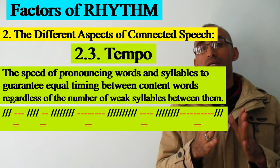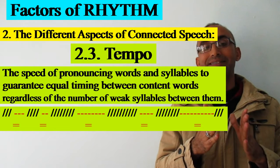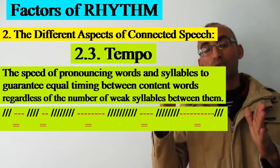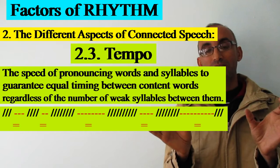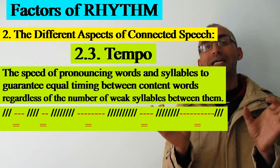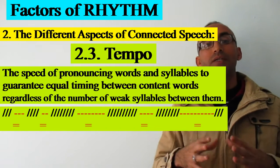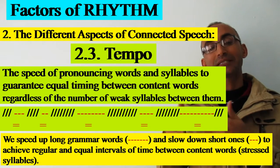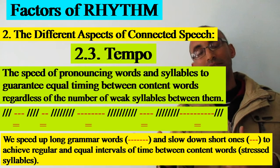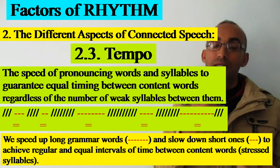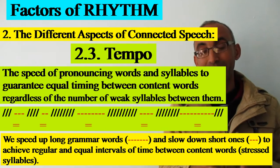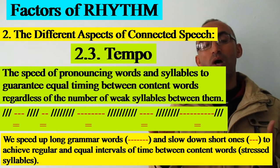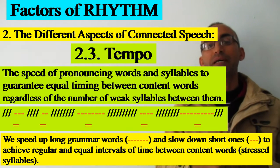For example, if we have one syllable in the first grammar word and three syllables in the second grammar word, I must pronounce them in equal and similar timing. This is done by speeding up with the polysyllabic grammar word and slowing down with the monosyllabic grammar word, to create that balance and equal timing. Together with the beats on the stressed words, I get my rhythm.